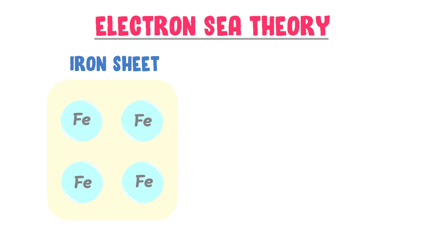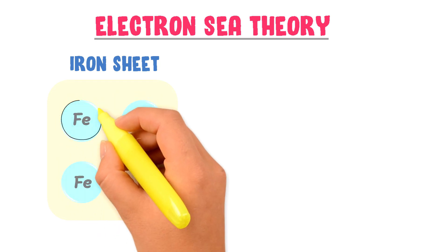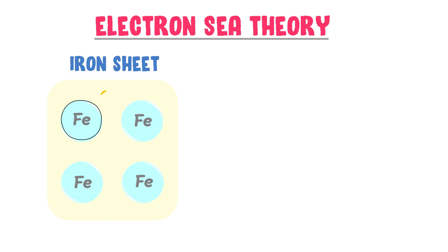According to electron sea or gas theory, this single atom of iron will lose its two valence electrons within the sheet. The iron atom has lost its two valence electrons and will become double positively charged.